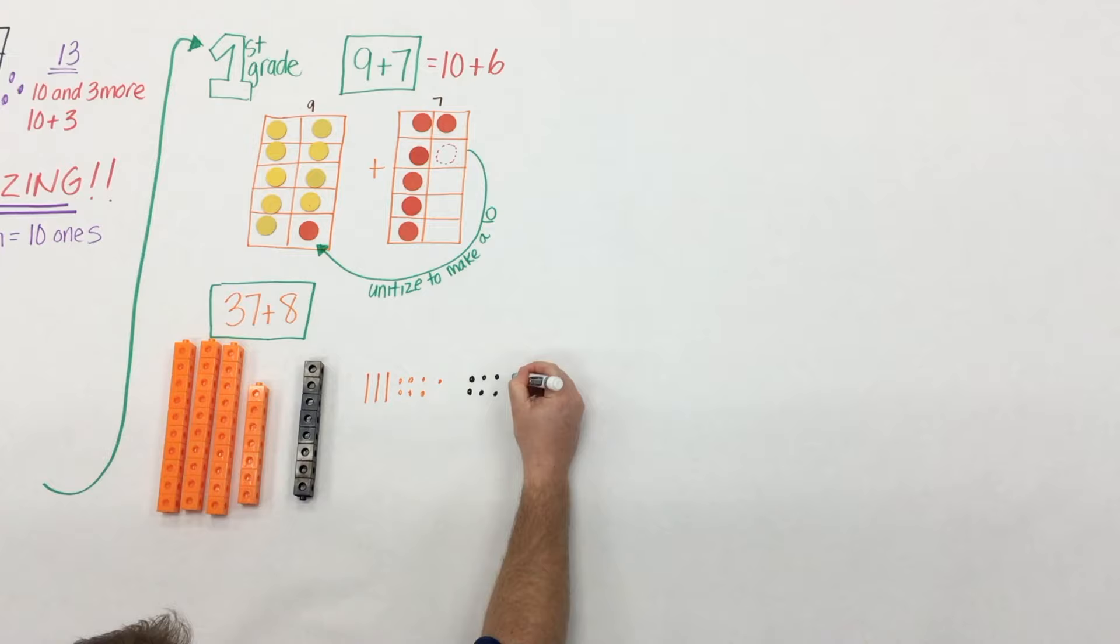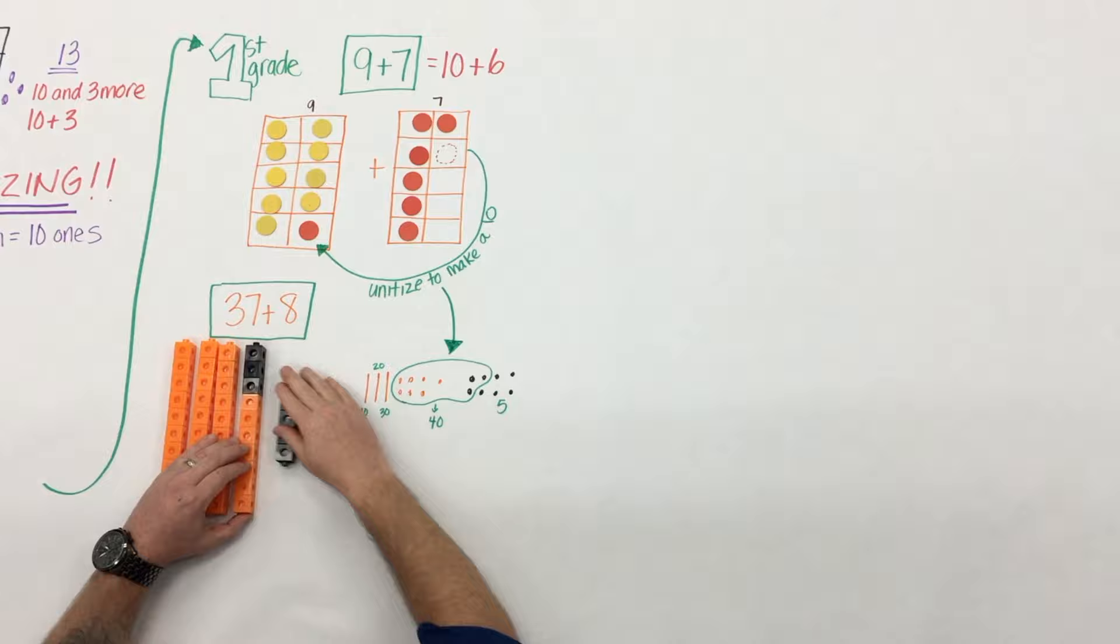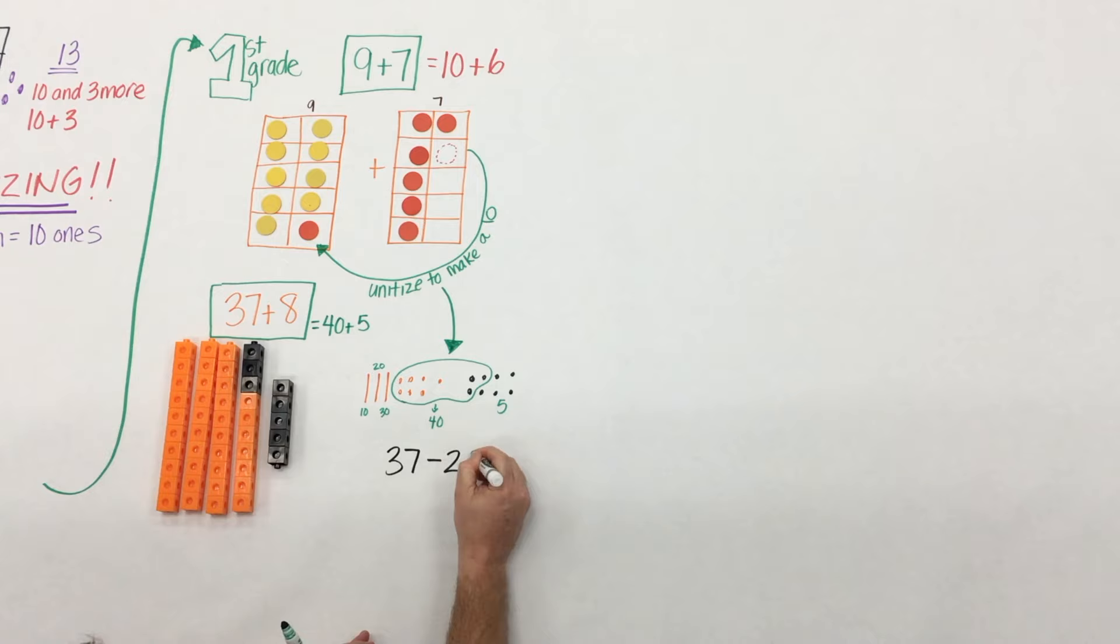The big piece here is that students as long as they're using concrete models they're also drawing representations. So what did we do? We want to make a ten. So we're going to take our ones and bundle them up to make another ten. Decompose the eight into a three and a five, give three to the 37 to make 40 and have five more.